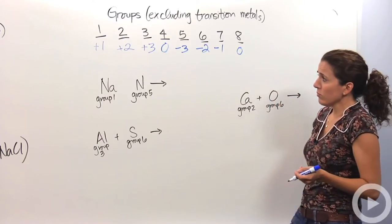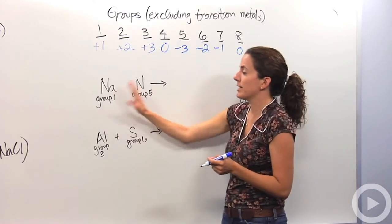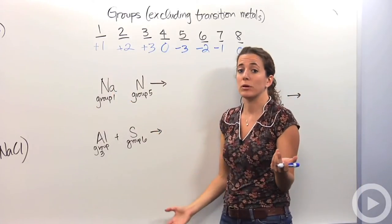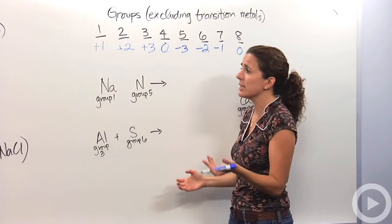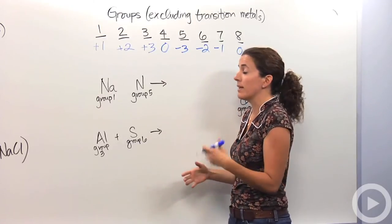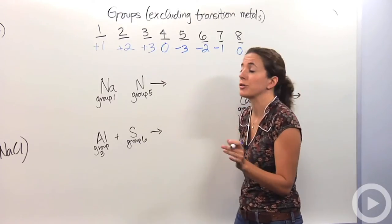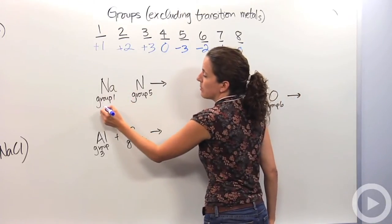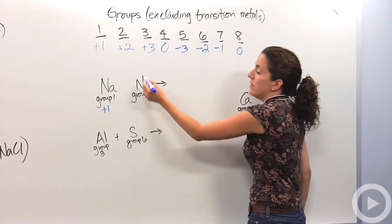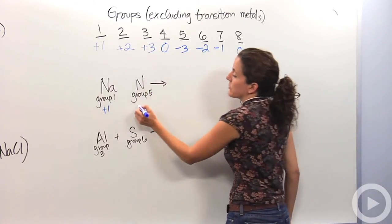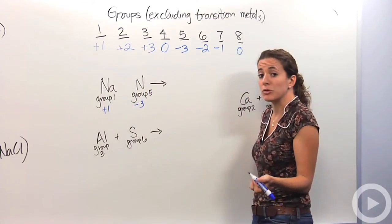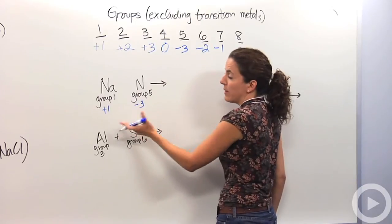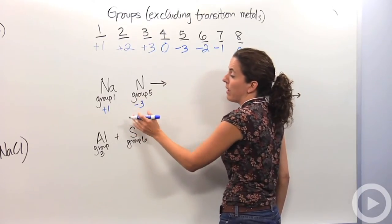So just knowing that, we can then predict how these guys are going to come together to make a neutral ratio, because ionic bonds are all neutral, and unless typically noted otherwise, we're going to say they're all neutral. So things in group one, sodium's in group one, we're going to say it's a plus one charge. Nitrogen's in group five, it's a minus three charge. We want to make this neutral, so how many are going to come together to make this a neutral compound?